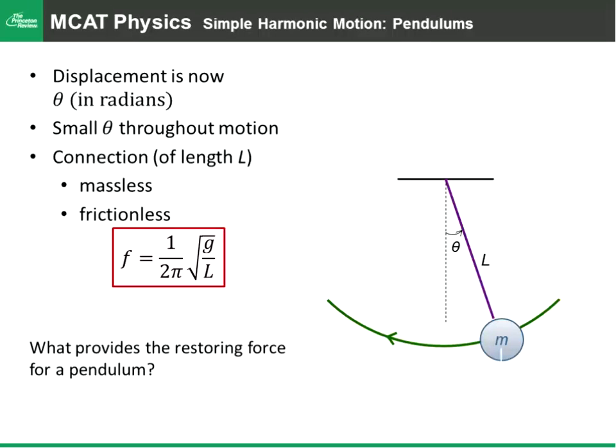When we talk about pendula or pendulums as simple harmonic oscillators, the displacement we measure is an angle rather than a physical distance like you have for an oscillating spring. But since we're measuring a physical phenomenon, we have to use radians in this case.